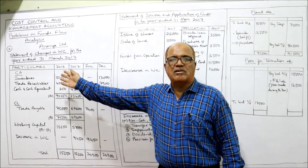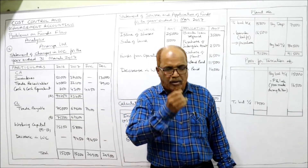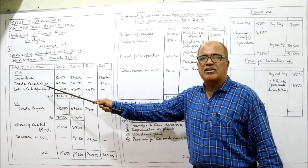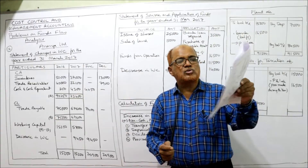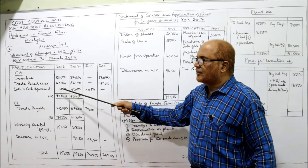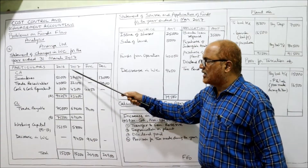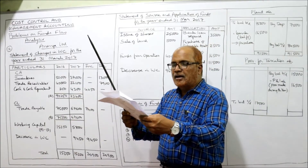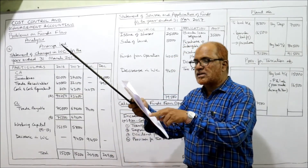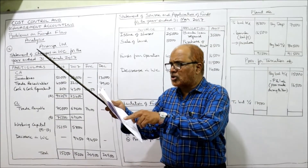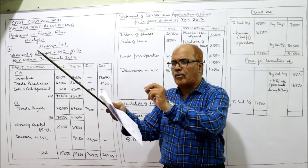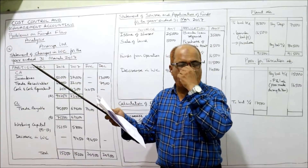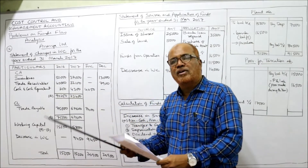In this problem, three current assets are given: inventories, trade receivable, and cash and cash equivalents. The values given in the problem — last year 2016 and current year 2017 — are taken as is. Total current assets: 90,250 for last year and 73,400 for current year. Current liabilities are trade payable, short-term provisions, and provision for taxation. Short-term provisions have no amount given, so only two current liabilities: trade payable and provision for taxation. Trade payable is always a current liability.